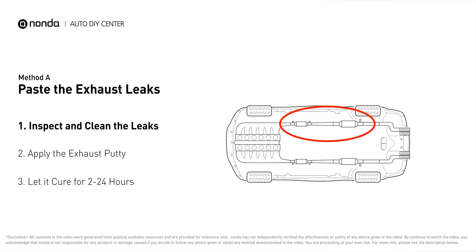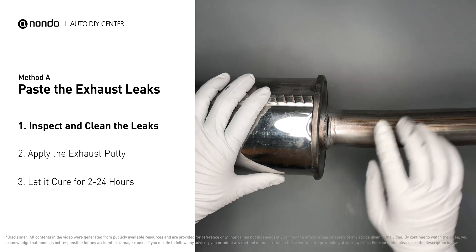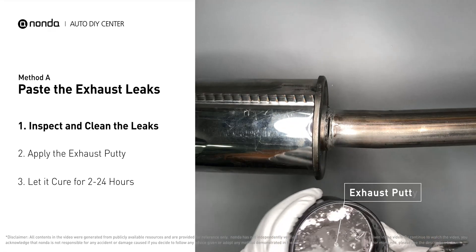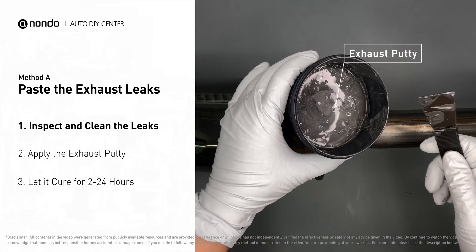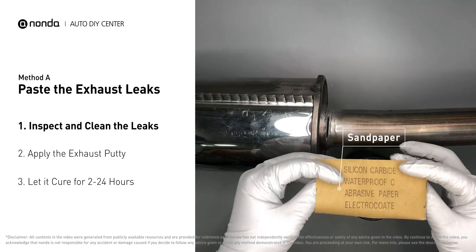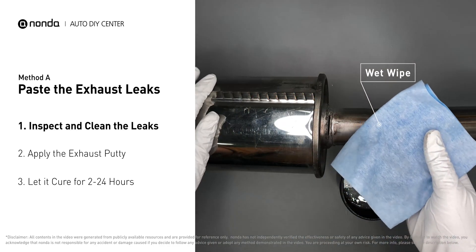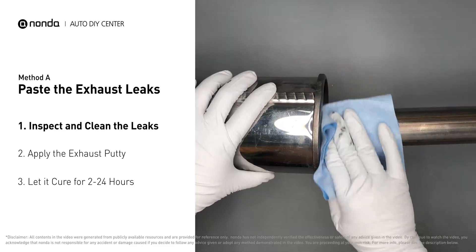The exhaust system begins at the engine combustion chambers and runs along the undercarriage of the vehicle, eventually ending with a visible tailpipe. If you have a leak around the corner, get some exhaust putty to seal it up. First, get sandpaper and a wet wipe to clean the leaking area for better application.